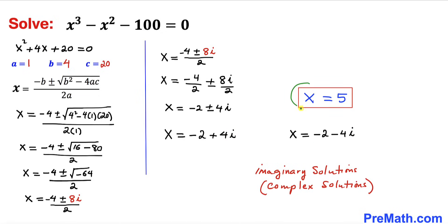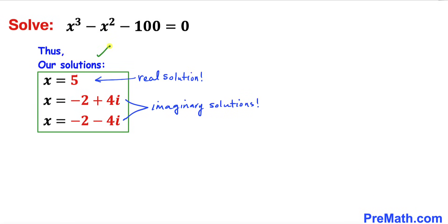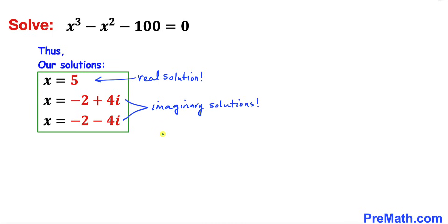Our third solution is x = 5, which is our real solution. So here are our three solutions: x = 5 is the real solution, while x = -2 + 4i and x = -2 - 4i are our imaginary solutions. Thanks for watching and please don't forget to subscribe to my channel for more exciting videos.